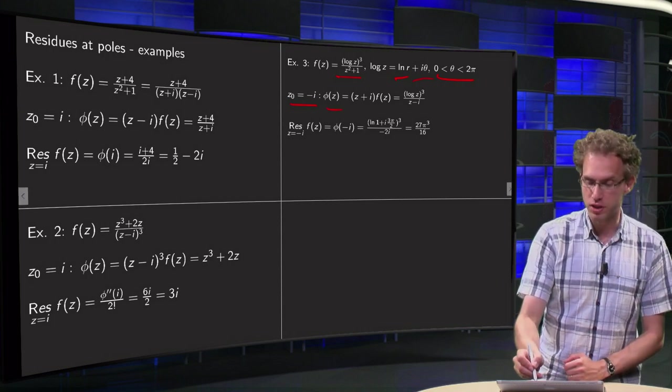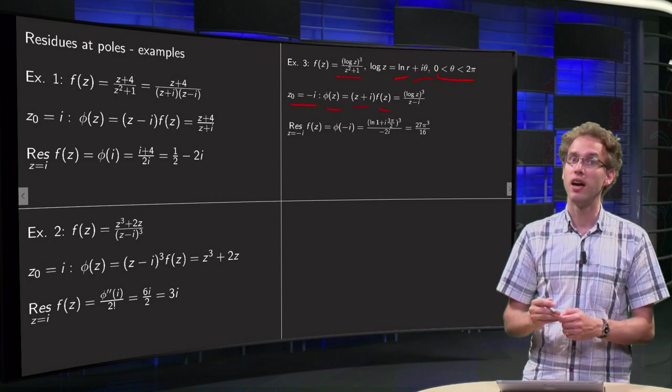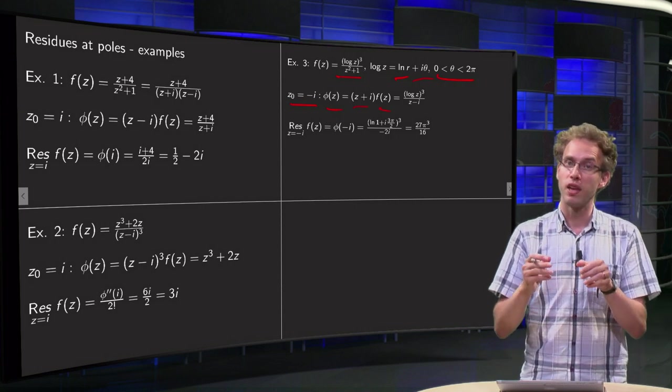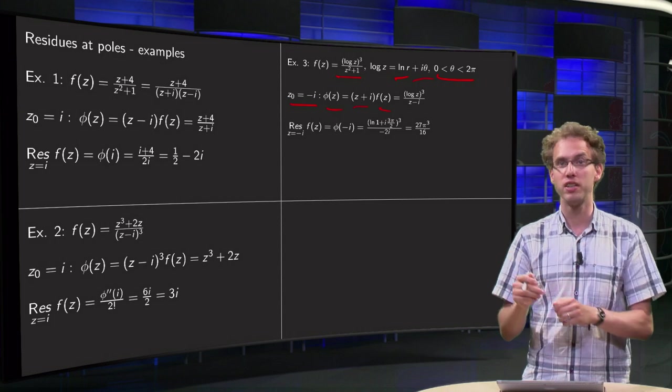We have a first order pole. We compute phi of z equals z plus i times f of z. We can expand z squared plus 1 as z plus i times z minus i.